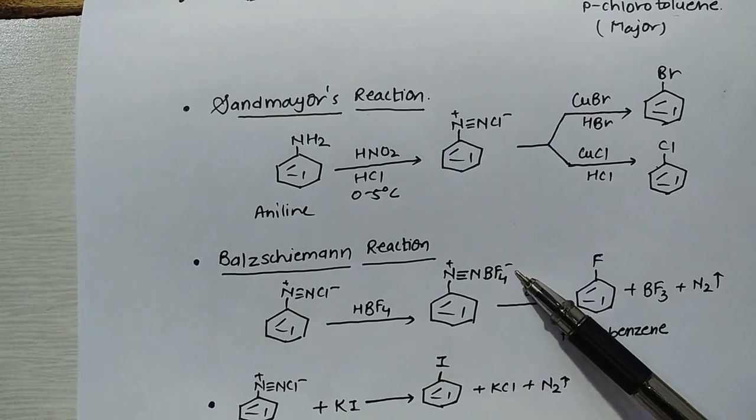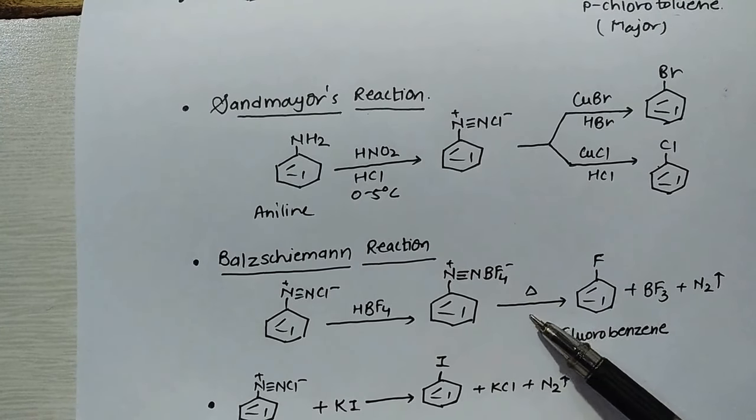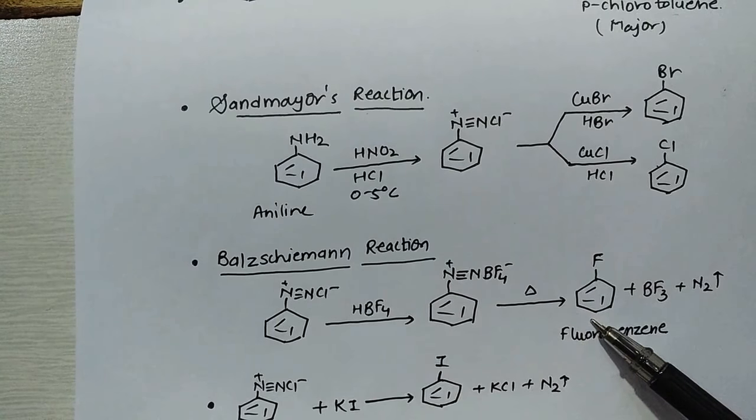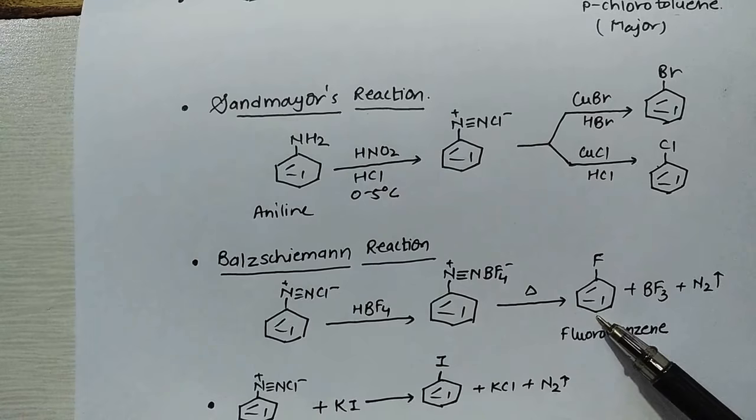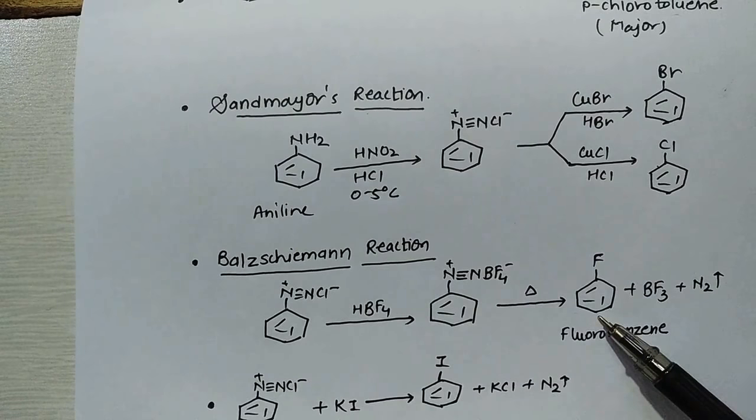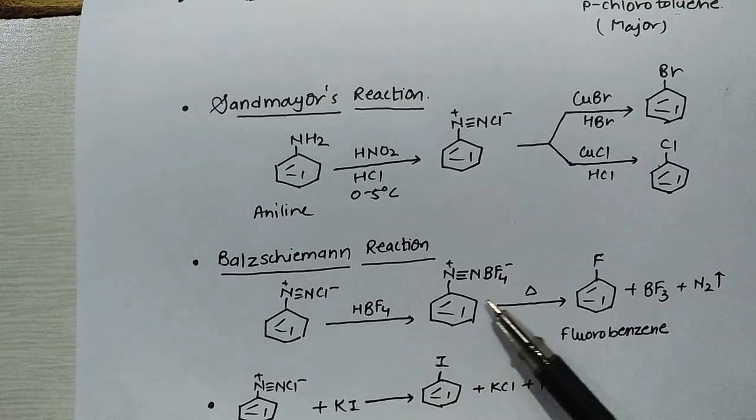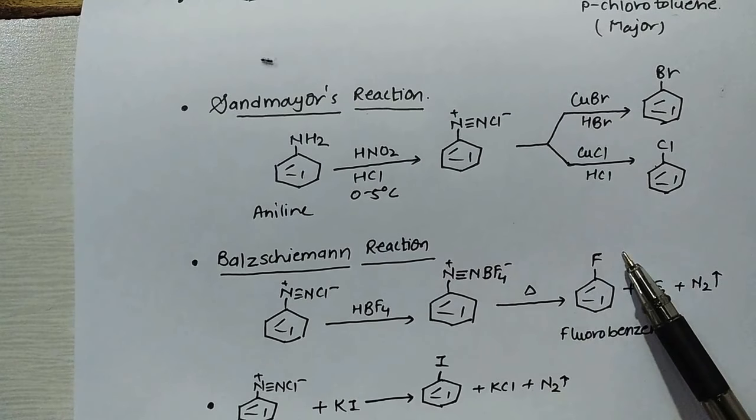To get fluorobenzene, diazonium chloride reacts with HBF4 to form diazonium fluoroborate, which on heating gives fluorobenzene. Point to be noted, hope you remember Swartz reaction makes alkyl fluoride and this Balz-Schiemann reaction makes aryl fluoride.